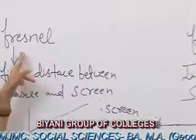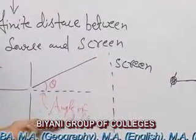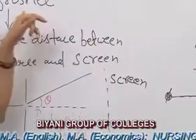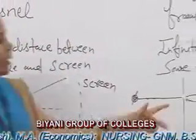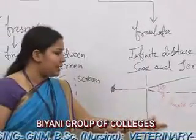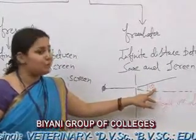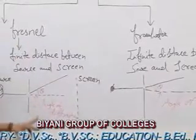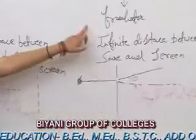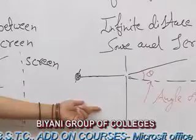In Fresnel group of diffraction, the distance between source to screen will be finite, which means inclination is very important for this group. In Fraunhofer diffraction, the distance between source to screen will be infinite, meaning the angular inclination theta is not important for Fraunhofer diffraction. Since distance does not matter for Fraunhofer diffraction, it is the most useful group of diffraction.